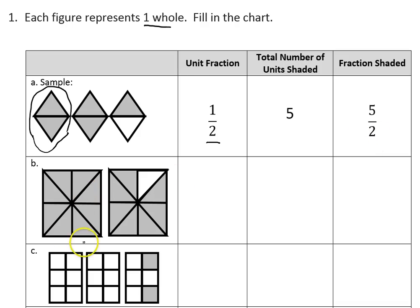In the next problem, I have two squares. Of course, each square has been divided into eight pieces. So if I take a look at just one of those pieces, my unit fraction would be one eighth. I'm only looking at one piece and how it relates to the one whole.